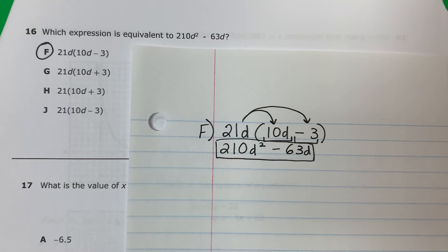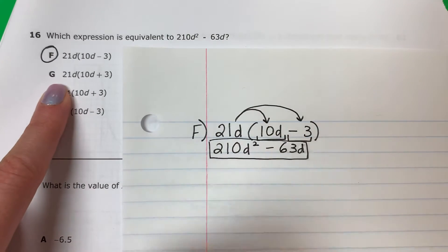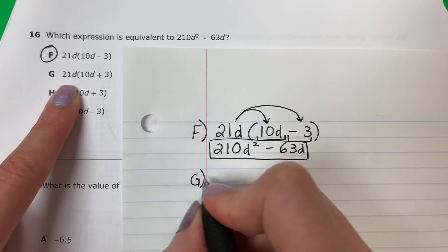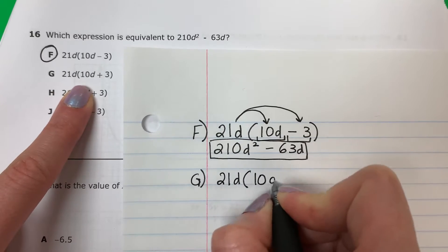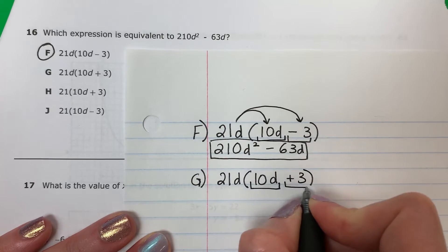Let's do the rest just to practice. Vamos a hacer los restos solo para practicar. Okay. So let's do F. I mean G. Lo siento. G. We're going to do G. Vamos a hacer la G. So 21 D, parenthesis, 10 D plus 3. Two parts. Dos partes. One, two.